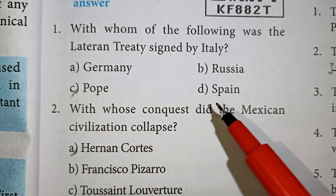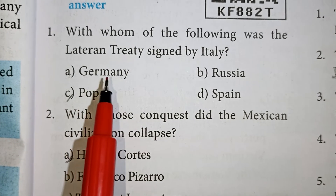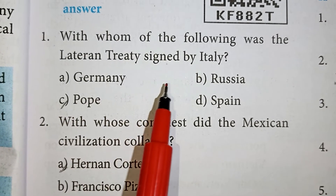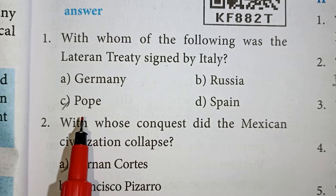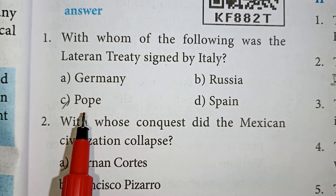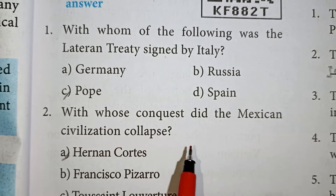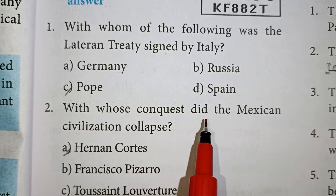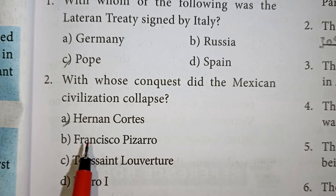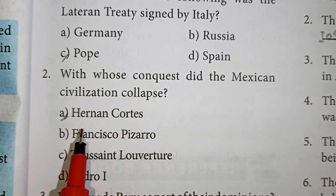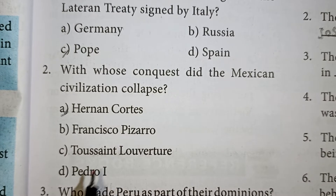With whom was the Lateran Treaty signed by Italy? The Pope is correct. With whose conquest did the Mexican civilization collapse? Hernán Cortés is correct.